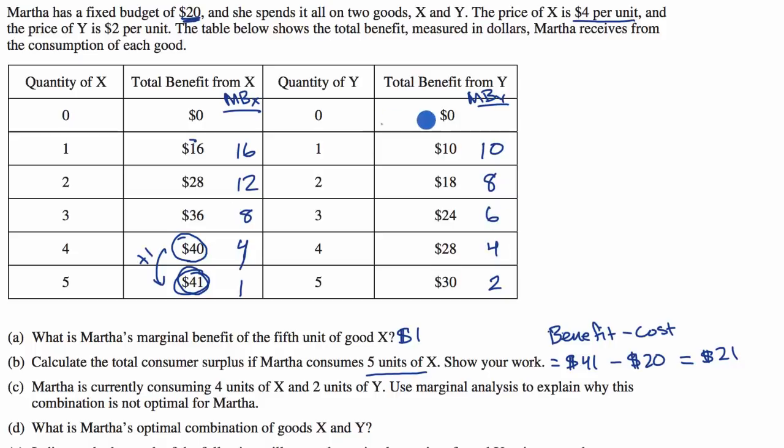We could use this information to think about marginal benefit of X per price of X. For this first unit, if you take the marginal benefit of X divided by the cost of a unit of X, $16 divided by $4 is four. 12 divided by four is three. Eight divided by four is two. Four divided by four is one. And one divided by four is 0.25.